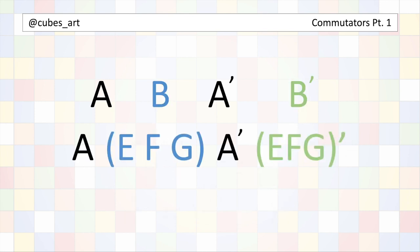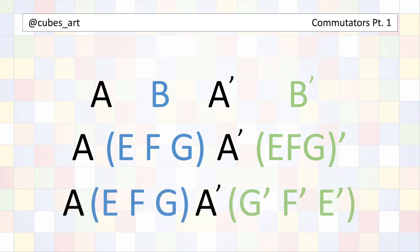So returning to the original structure, we substitute E, F, G, and the inverse of E, F, G, in for B and B'.